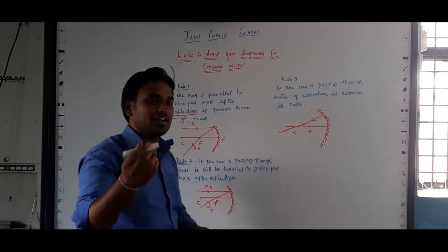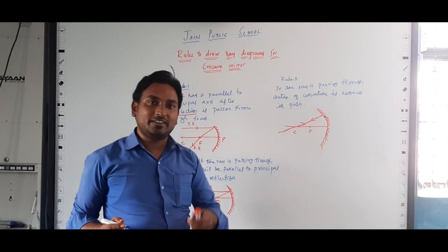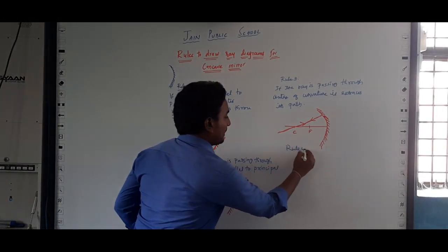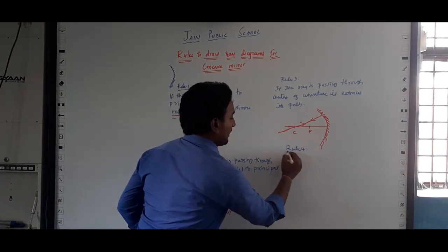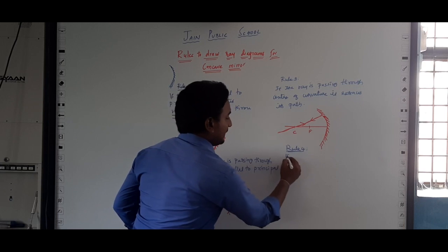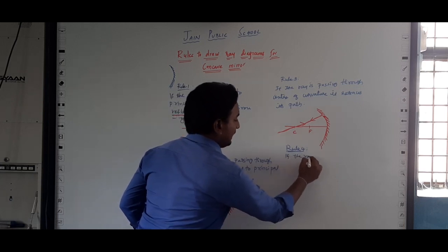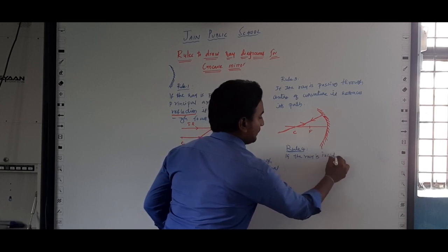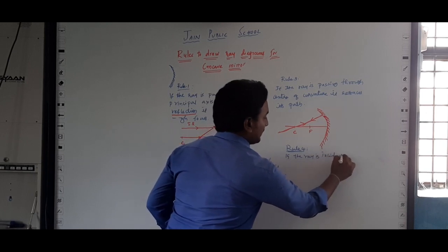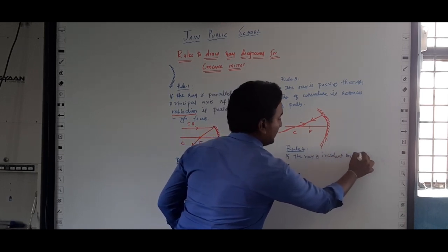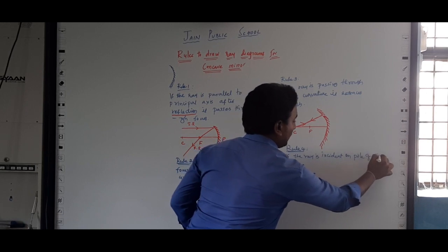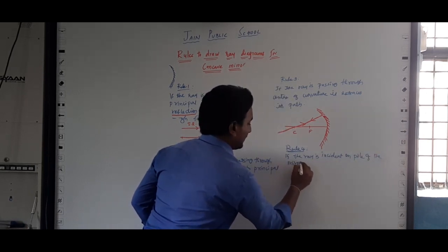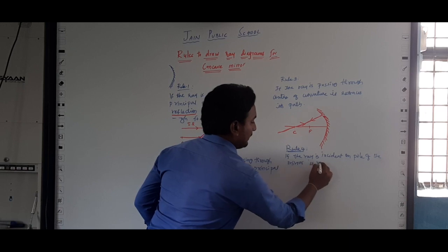Rule number 4 — as you are learning from your class 6 and 7 also, this is very important. Rule number 4: if the ray is incident on the pole of the mirror, it reflects such that the angle of incidence equals the angle of reflection.